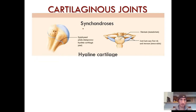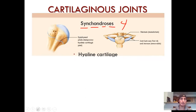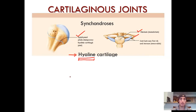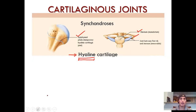The first type: synchondroses — four syllables. These are cartilaginous joints where the type of cartilage is hyaline cartilage. Two examples: the epiphyseal plate, and the sternum and rib attachment.